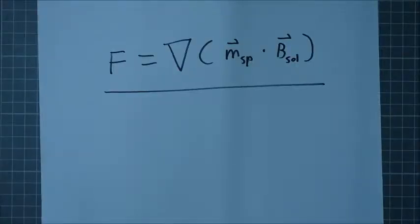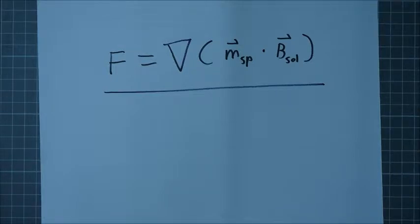Now the key variable of the mathematics is the mechanical force actually generated by the solenoid, which is a function of the magnetic field of that solenoid, and it's represented by this equation here. The mechanical force is the gradient of the magnetic moment of the spherical magnet, the permanent magnet, dotted with the magnetic field of the solenoid itself.